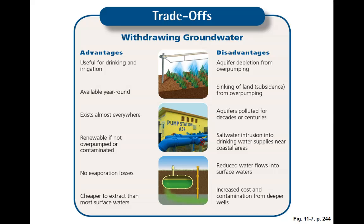In many cases, groundwater is much cheaper to extract than most surface waters. However, there are some disadvantages as well. This can lead to aquifer depletion and subsidence from over-pumping. Aquifers can be polluted for decades or centuries because they don't self-clean very well. You can end up with saltwater intrusions, especially in coastal areas — think about the case study of salt seeping into the aquifer in the LA Basin region. We can also see reduced flows into surface waters and increased cost and contamination from deeper wells, because if your well starts to run out, the answer is often to go deeper.